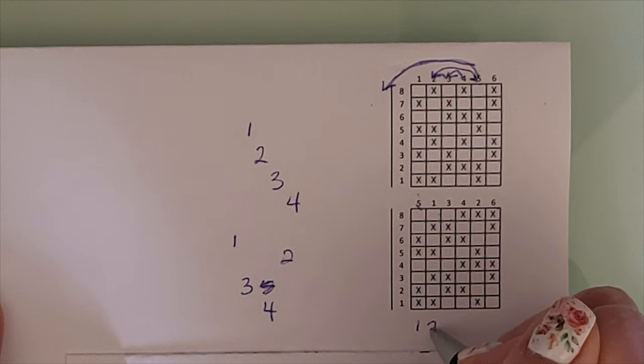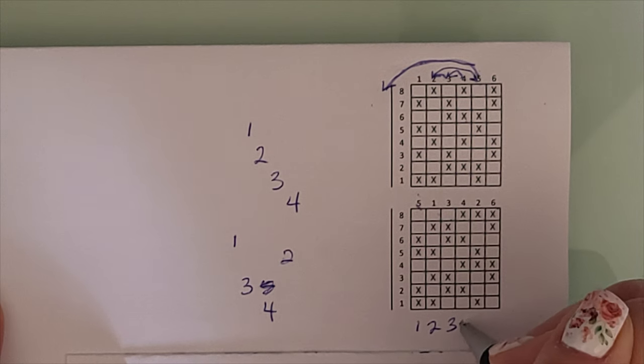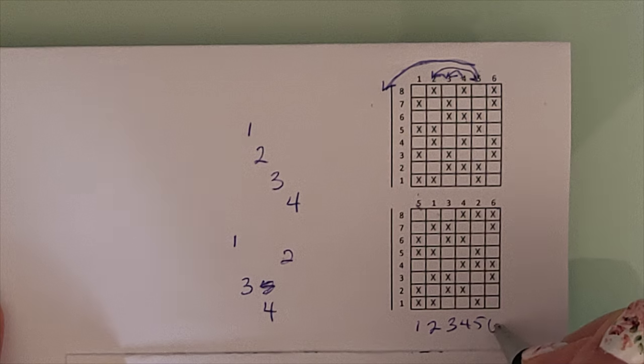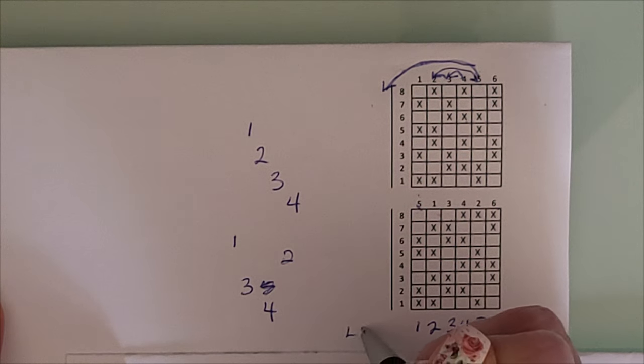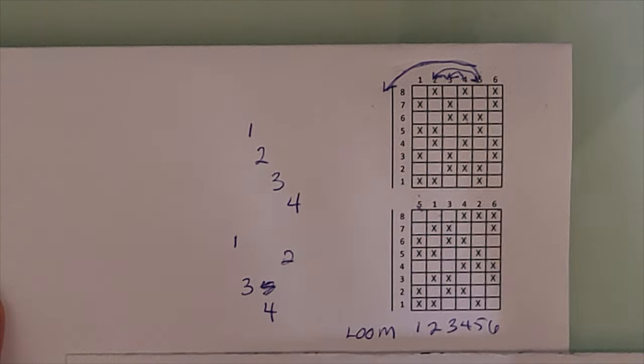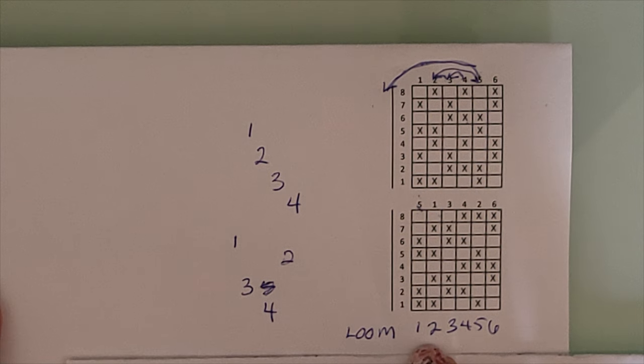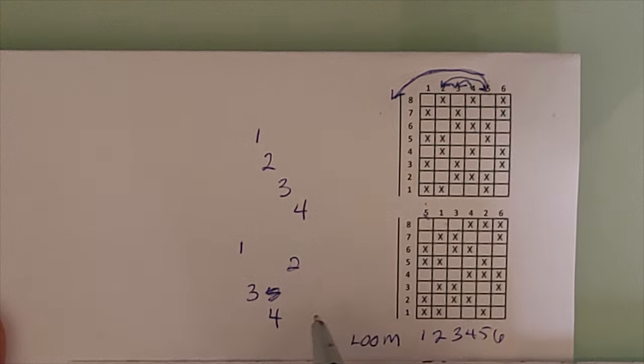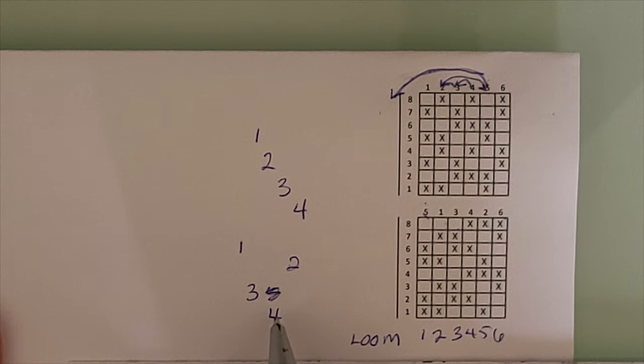This is one, two, three, four, five, and six. This is on my loom. Now, when I am treadling, if I treadled one, two, three, four on my loom, I'm going to be actually treadling five, one, three, four. So I don't want to do that.